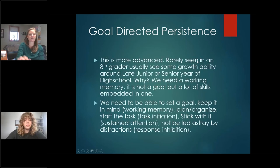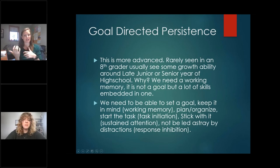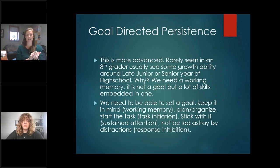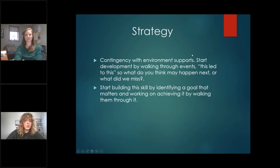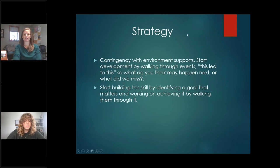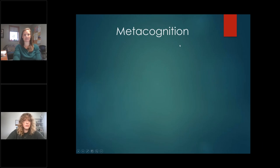The next area develops later, around eighth grade and into high school and early college: goal-directed persistence. This is more advanced because it requires many embedded skills — working memory to keep the goal in mind, planning and organizing, task initiation to start, sustained attention to stick with it, and response inhibition to not be led astray by distractions or peer pressure. Strategies involve contingency with environmental supports, walking through 'this led to this — what do you think happened next?' and identifying a goal that matters and working on achieving it step by step.